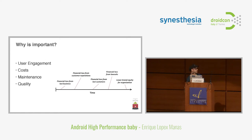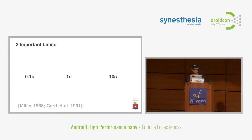There are a few aspects of software performance I'll try to tackle in this presentation. When it comes to responsiveness, there are three important limits. One is 0.1 seconds — everything under 0.1 seconds the user perceives as instant. The next limit is 1 second — more than one second and the user starts perceiving something is wrong. The last one is 10 seconds — more than 10 seconds and you're pushing your user to exit the application.